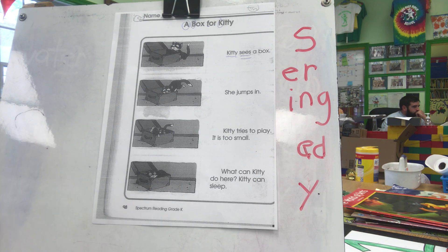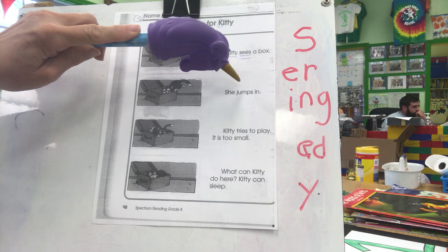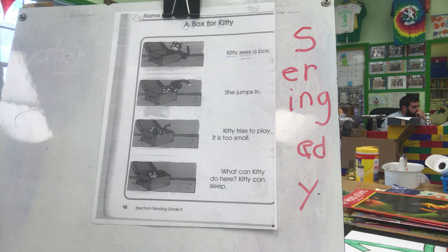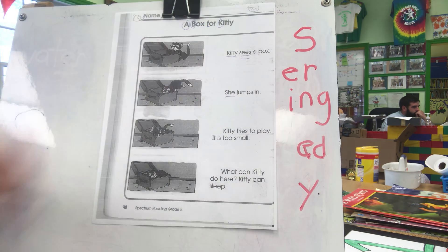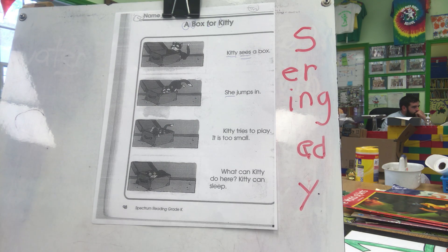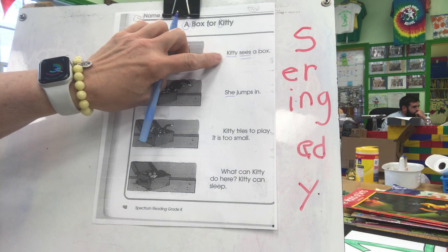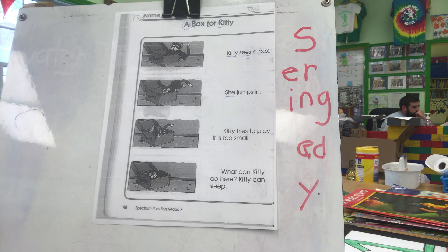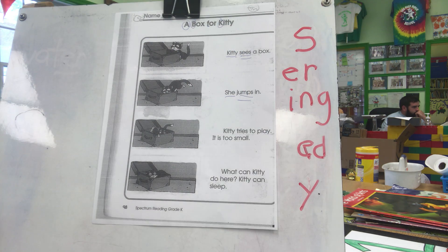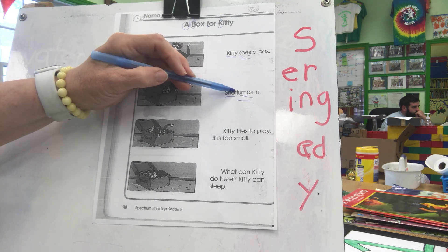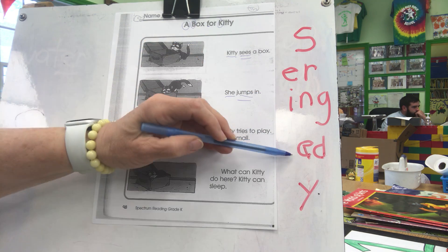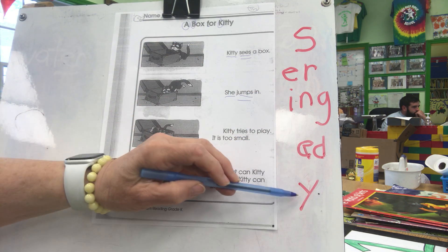Look at the next picture. She jumps in. You should be able to read that all by yourself. Put a line under she — that is the subject of that sentence. She is a pronoun, talking about Kitty. Two lines under jump — that's our action verb. She's a jumper, she's jumping, she jumped, she's kind of jumpy.